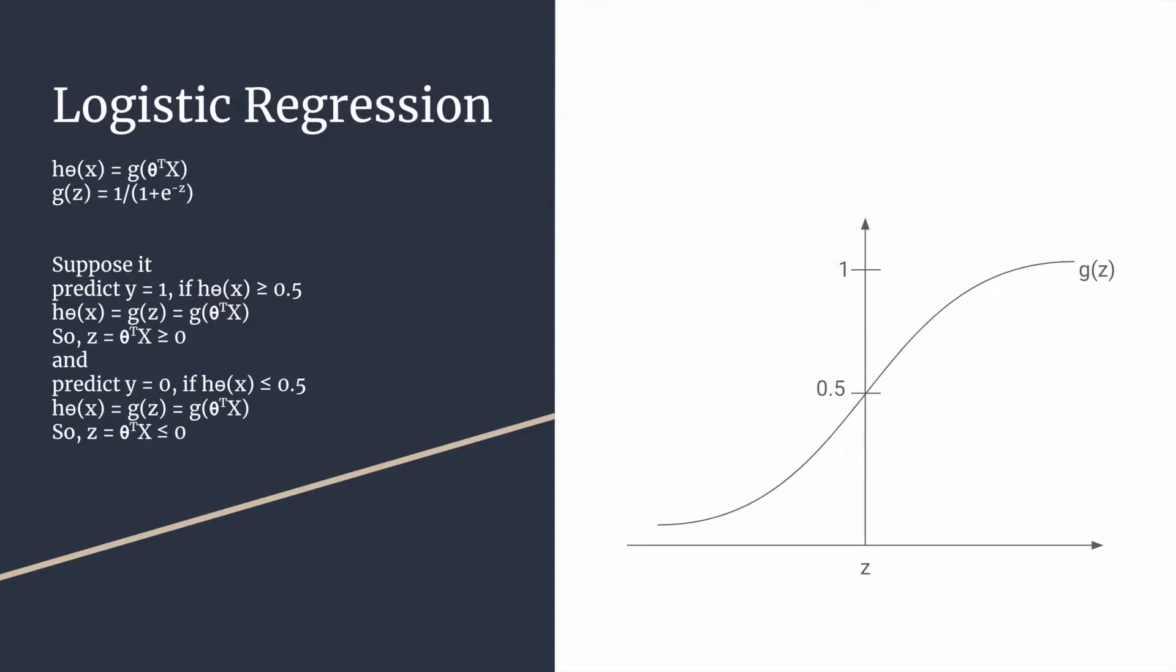In the logistic regression, as you know, h of theta x equals g of z, and z is theta transpose x equals 1 upon 1 minus e to the power minus z. That's g of z where z is theta transpose x. Let's suppose that it predicts y equals 1 if h of theta x is greater than or equal to 0.5. That means this area from 0.5 to 1, the g of z predicts 1. But for 0 to 0.5 it predicts 0, y equals 0.